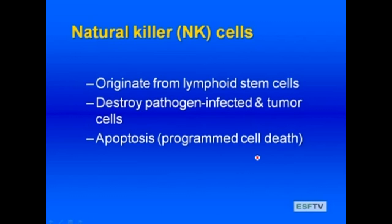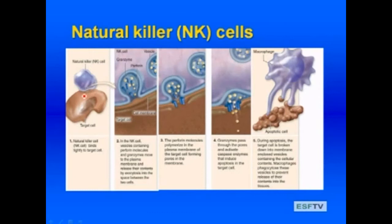Natural killer cells kill virus-infected and tumor cells in the absence of antibodies. These cells are really important for fighting viral diseases as well as tumors and cancer. They originate from lymphoid cells and destroy pathogen-infected and tumor cells by causing programmed cell death, or apoptosis. They secrete proteins that insert themselves into the target cell's membrane, causing destruction. Here a natural killer cell attaches to a tumor or virally infected cell, releases enzymes causing programmed cell death, and then a macrophage comes along to clean things up.